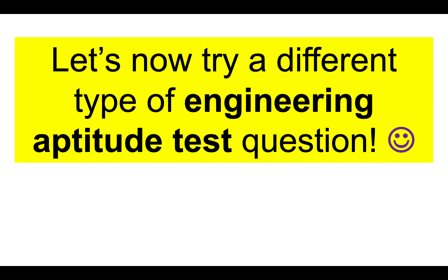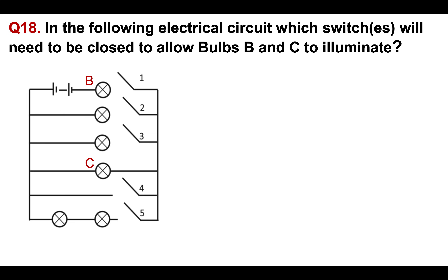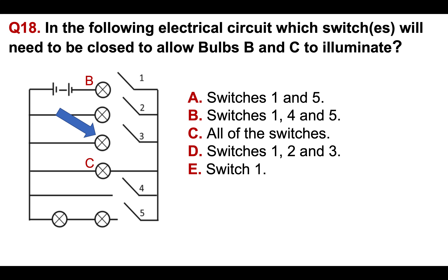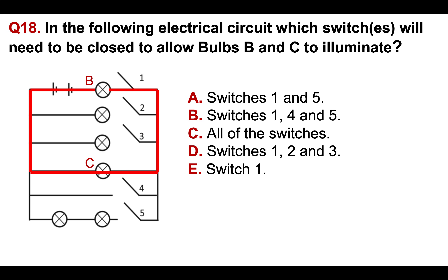Let's now try a different type of engineering aptitude test question. Question 18 is electrical aptitude — these are very common during engineering aptitude tests. In the following electrical circuit, which switch or switches will need to be closed to allow bulbs B and C to illuminate? A: switches one and five; B: switches one, four, and five; C: all of the switches; D: switches one, two, and three; E: switch one. That symbol is a bulb, that is the power supply or battery, and that is the switch. To illuminate B and C, we form that circuit by closing just one switch — so the answer is E.